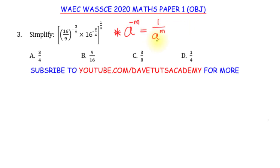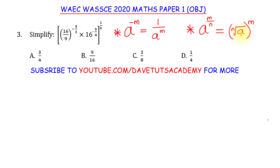So if you have a negative power, that means you should use that number to divide 1, like 1 over A raised to power M. The second rule: when we have a fractional power, something like A raised to power M over N, this is the same as finding the Nth root of A and then raising it to the power of M.